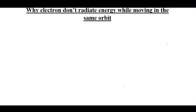This video is about one of the postulates of Bohr atomic theory, which states that an electron revolving around the nucleus in the same orbit does not radiate any amount of energy. That is, this electron while revolving in this specific orbit does not radiate or gain any amount of energy.